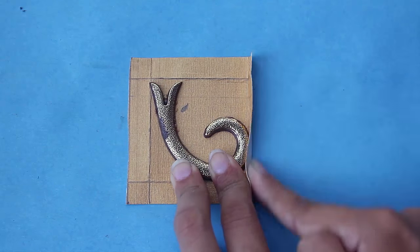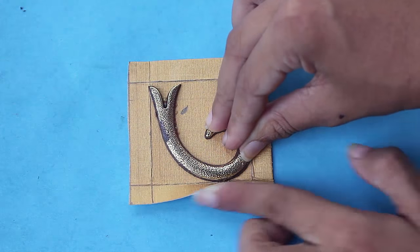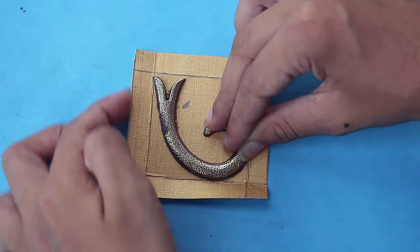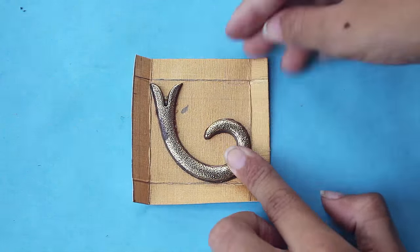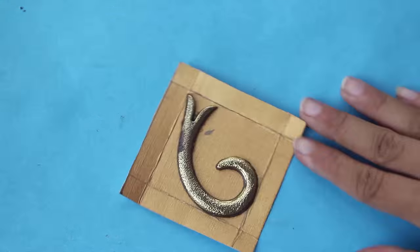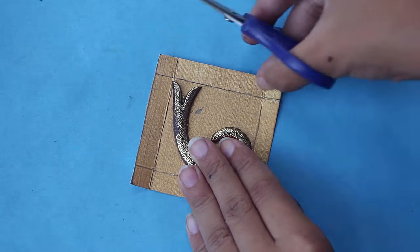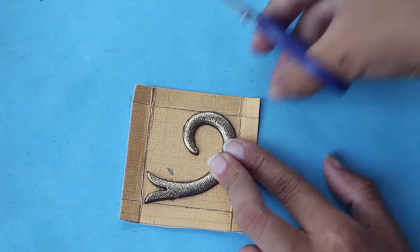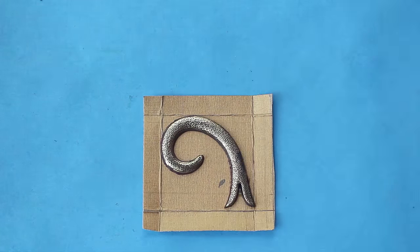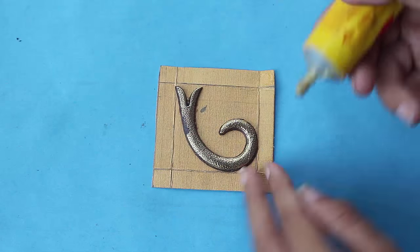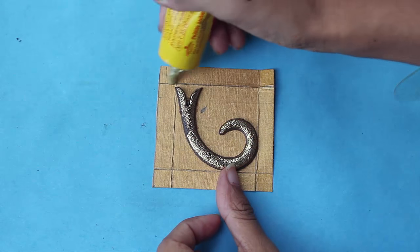By making these folds, you will get four little squares in the corners. You have to make slits by cutting one side of these squares. Now apply glue on these small squares.